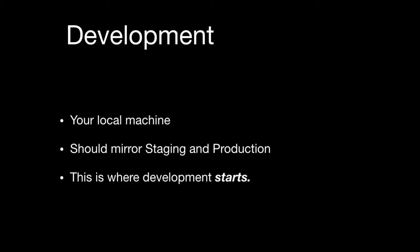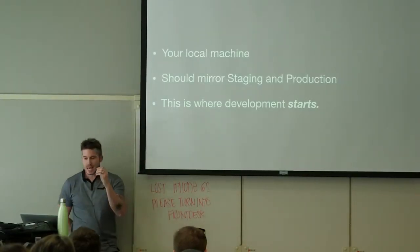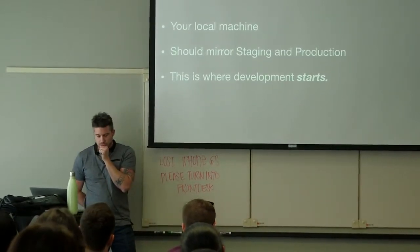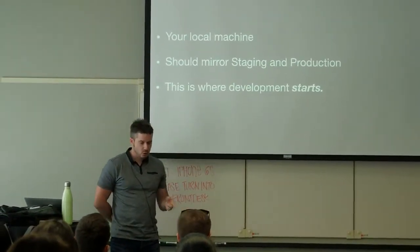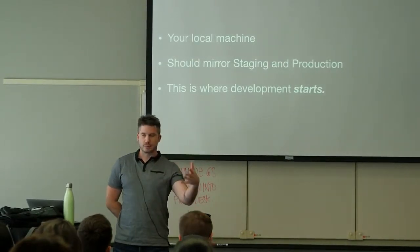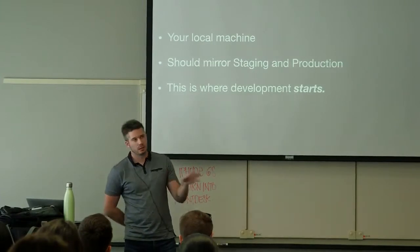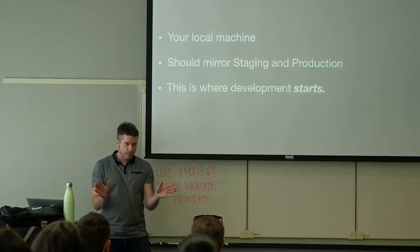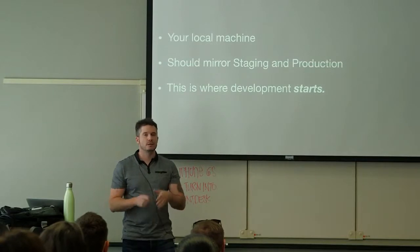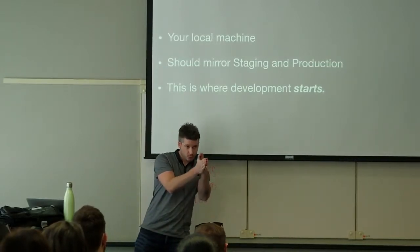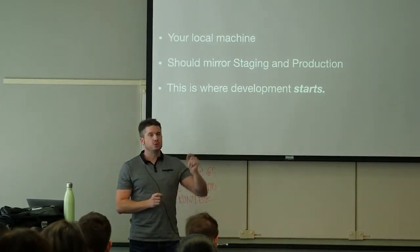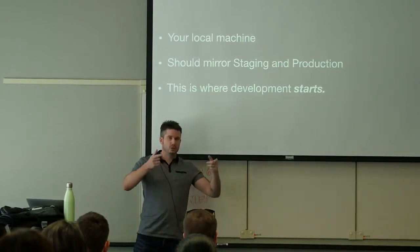Development, or local, happens on your local machine — on your laptop or desktop — and it is supposed to mirror your staging and production environment. Let's say your client's project is going to be running on a traditional LAMP stack: Linux, Apache, MySQL, and PHP. If you have a Windows laptop or a Mac, I highly recommend that you try to create as much parity between your machine and what's on staging and production, because when you deploy code to staging it's going to save you debugging headaches.